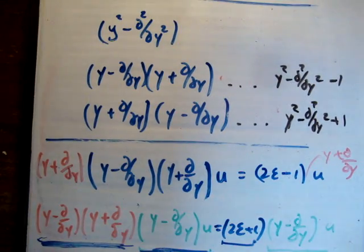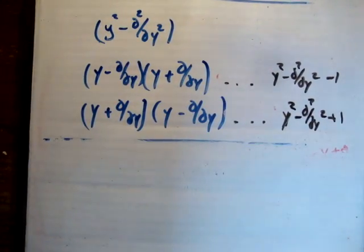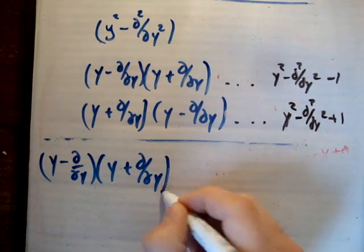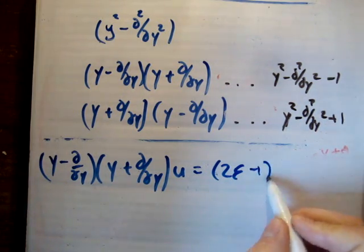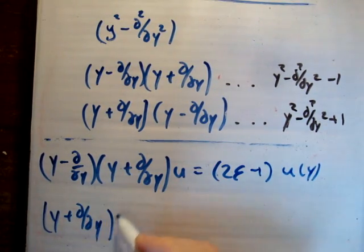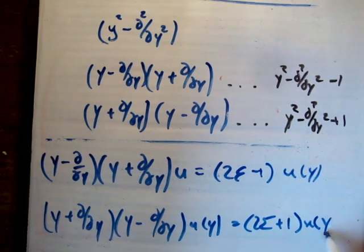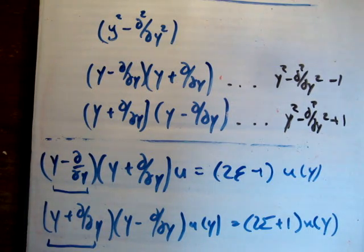To summarize, we have two dimensionless Schrödinger equations. The first is (y minus del/del-y)(y plus del/del-y) times U(y) equals (2 epsilon minus 1) times U(y). The second is (y plus del/del-y)(y minus del/del-y) times U(y) equals (2 epsilon plus 1) times U(y). The operator (y minus del/del-y) will lower your energy, and (y plus del/del-y) will raise your energy. Thanks for watching — please pass it on to your friends and subscribe to my channel.